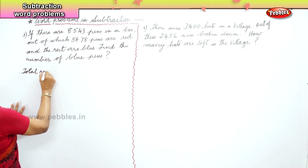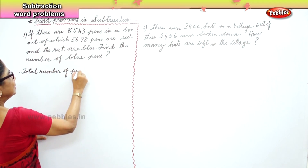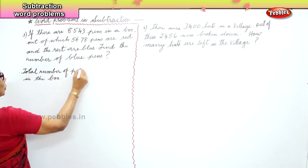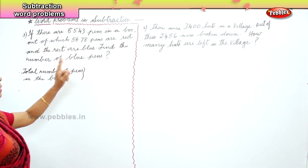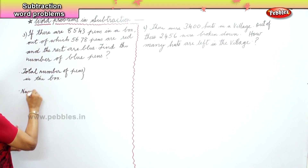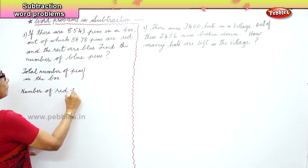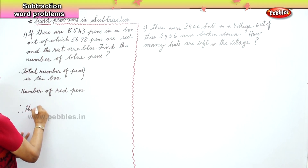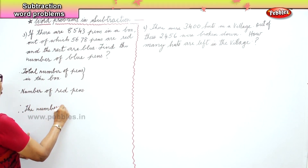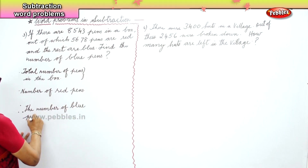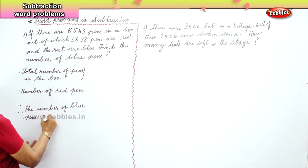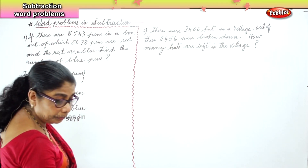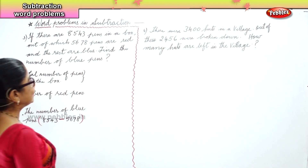First you write: total number of pens in the box. Next statement: number of red pens. And then finally: therefore, the number of blue pens. To find the number of blue pens — eight thousand five hundred and forty-three minus five thousand six hundred and seventy-eight. Now we set up the column with the minus sign.